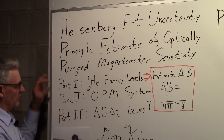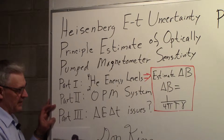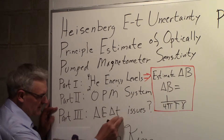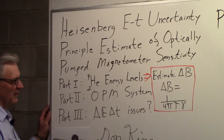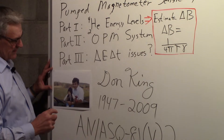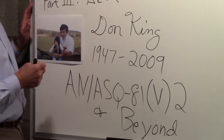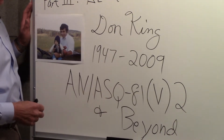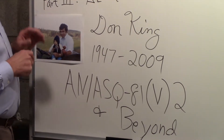In part one we discussed helium-4 in particular, and in part two we talked about a helium-4 optical pump magnetometer system like one used by the Navy in anti-submarine warfare. Now in part three we address issues related to the Heisenberg energy-time uncertainty principle. These three parts — and possibly a fourth — are done in memory of a friend, Don King. He and I worked on optically pumped magnetometers for a long time, including the ASQ-81 system and things beyond that.